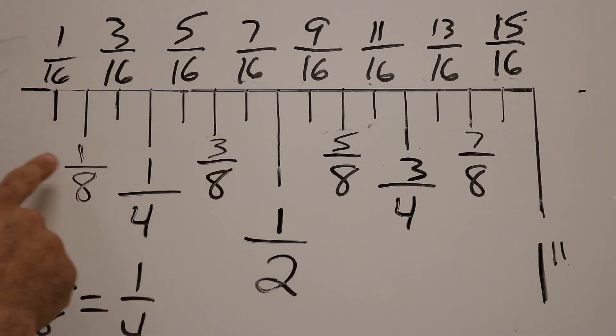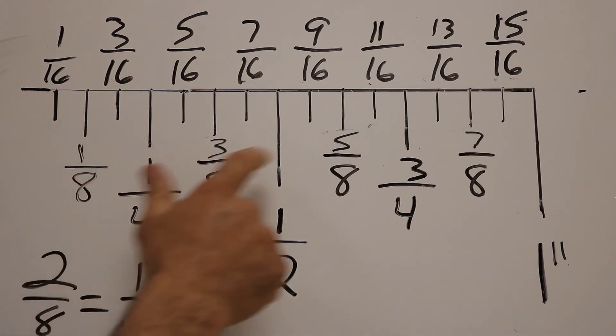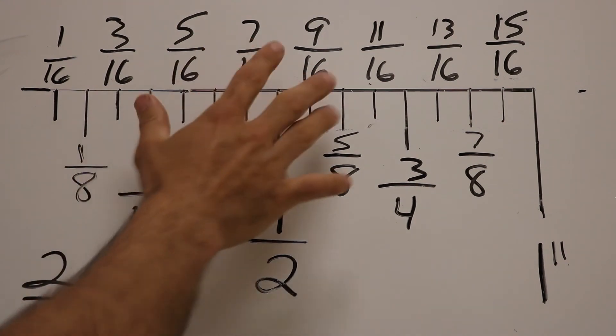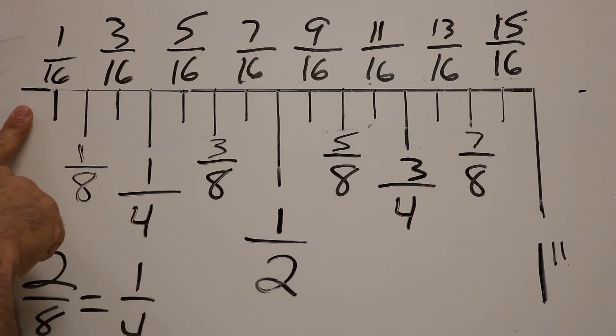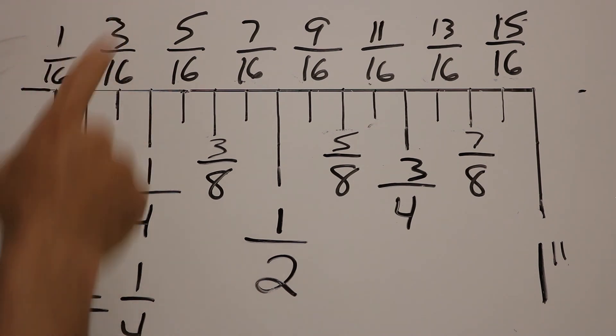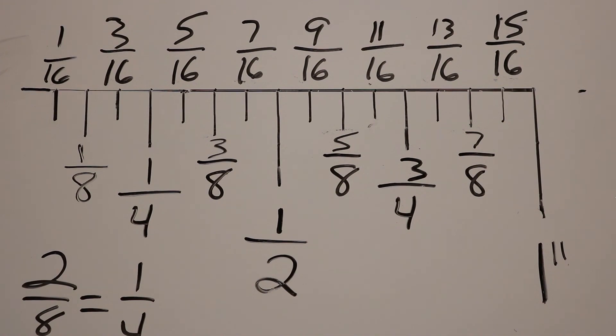My next line breaks it into eights and I have eight equal parts and I just start counting odds, one, three, five, seven. And then my smallest tick marks, which are my sixteenths, it breaks this one inch into sixteen different parts and I can label all those one, three, five, seven, nine, eleven, thirteen, and fifteen.